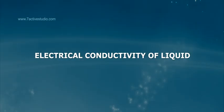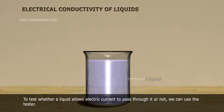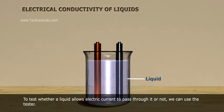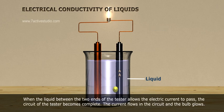Electrical conductivity of liquids. To test whether a liquid allows electric current to pass through it or not, we can use the tester. When the liquid between the two ends of the tester allows the electric current to pass, the circuit of the tester becomes complete.